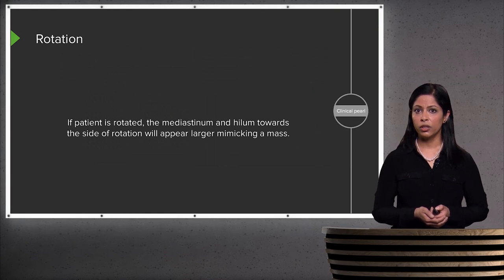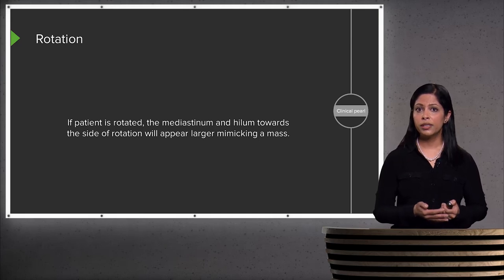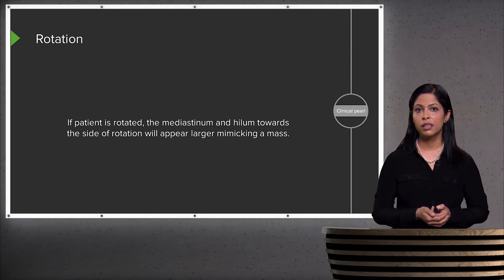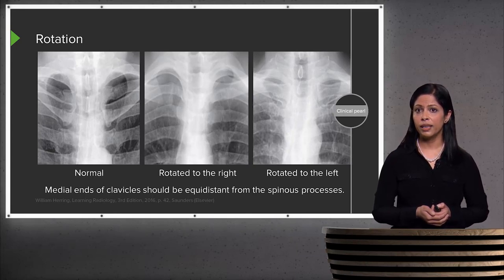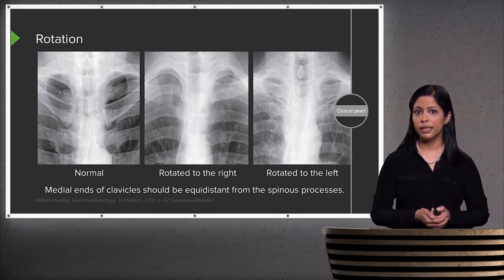Rotation is another technical factor. If a patient is rotated, the mediastinum and hilum turn towards the side of rotation and appear larger on that side, which can mimic a mass. This is an example of three different types of rotation: the first is normal, the middle represents a patient rotated to the right, and the last represents a patient rotated to the left.